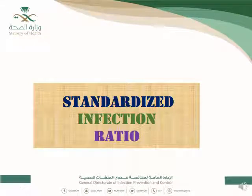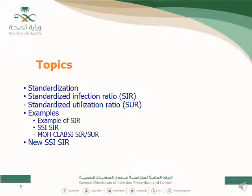Today we will talk about standardized infection ratio, one of the major metrics used for HAI prevention. There is also a newly created standardized utilization ratio — it is the same concept, but used for utilization rather than infection. We will give examples for SIR for different types of infection and some comments about SIR.